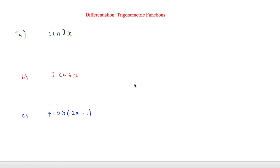We have three questions: sin 2x, 2 cos x, and 4 cos(2x + 1). We have to differentiate each of these using the rules from before. For the first one, you could use the chain rule, which we haven't covered yet and will be discussed in another video — but we're not going to use it here as we can do it by inspection.